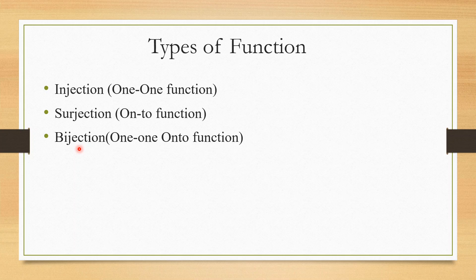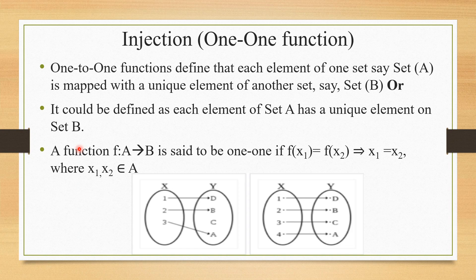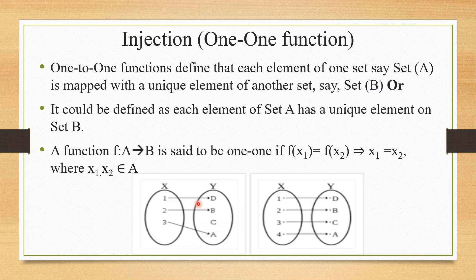A one-to-one (injective) function is defined such that each element of set A is mapped to a unique element of set B. Each element of set A has a unique element in set B. Mathematically, a function f from A to B is said to be one-to-one if f(x₁) = f(x₂) implies x₁ = x₂, where x₁, x₂ are elements of A.